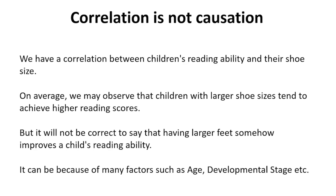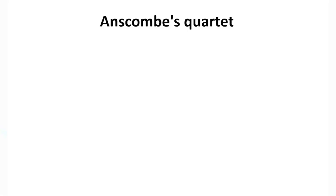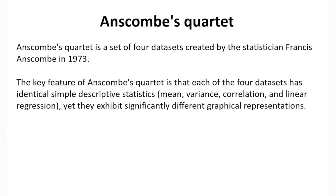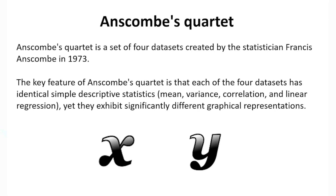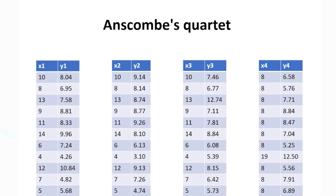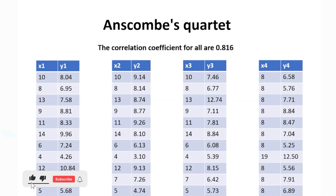In the next section, we talk about Anscombe's Quartet — a very important study carried out in 1973 by Francis Anscombe. Four different data sets were collected that had identical descriptive statistics: the means (x-bar and y-bar), variances, and extent of linear association were all identical across all four data sets. Because of this, the Pearson's correlation coefficient for all four data sets was found to be the same: 0.816, which is a strong positive correlation. But does this mean all four data sets exhibit a genuine linear association?